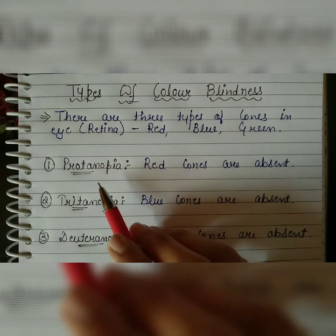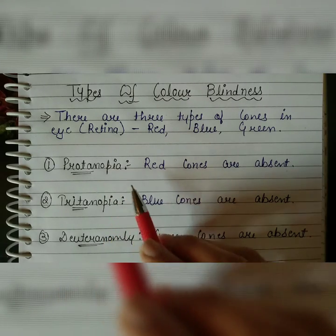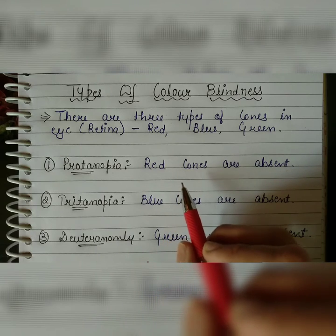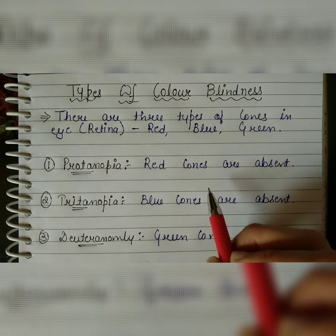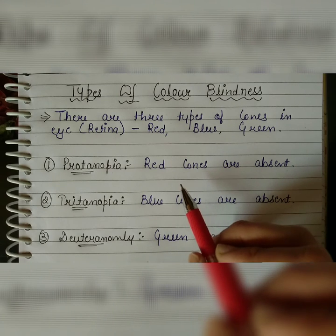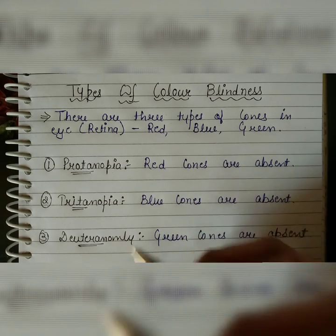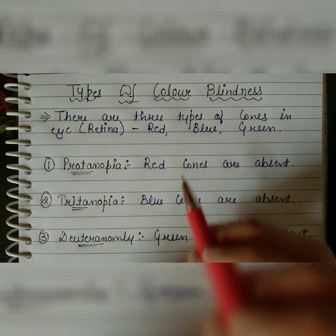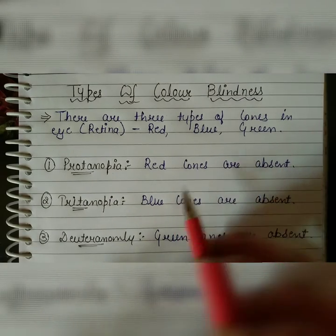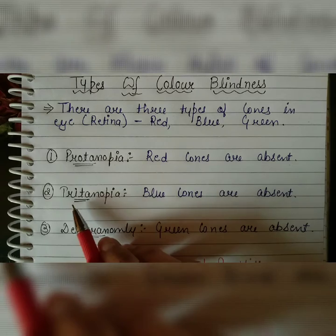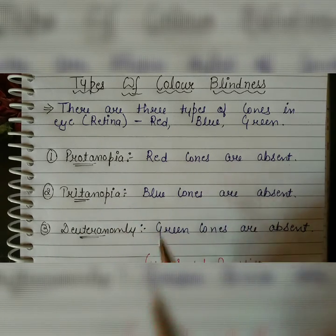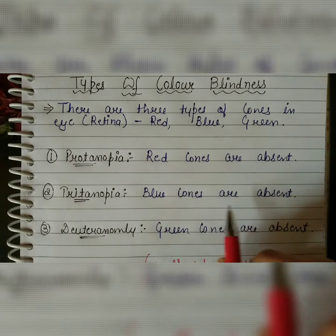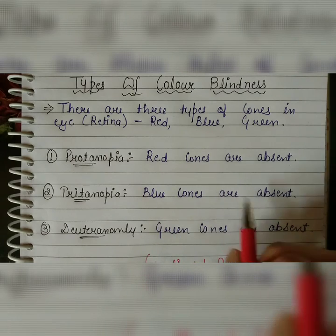The person suffering from protanopia has absent red cones in the retina. Due to this, red color is not visible properly to them — they can see other colors but not red. Similarly, the person suffering from tritanopia has absent blue cones in the retina.